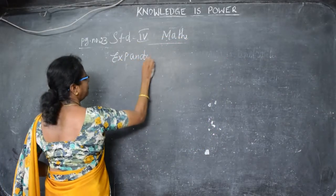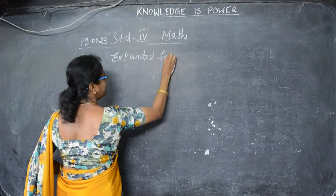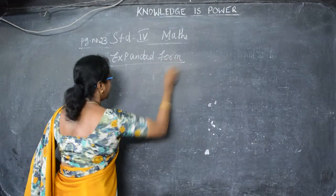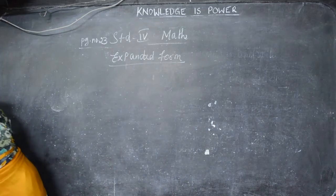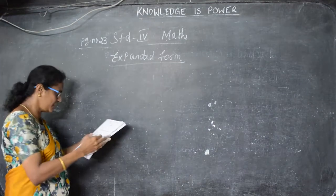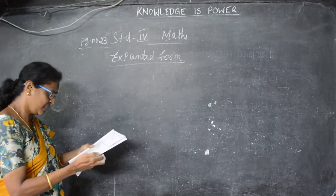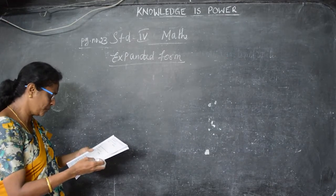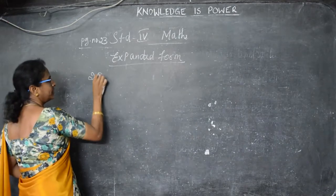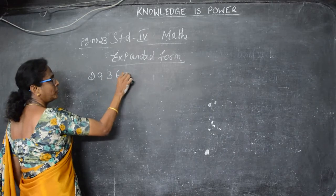Expanded form. So expanded form of numbers: 1, 10, 100, 1000 — another number. So we have to write the expanded form. Suppose we are given a number like this. What is this number? Read out louder.